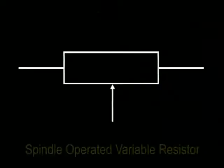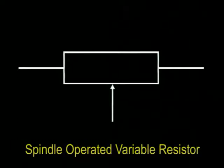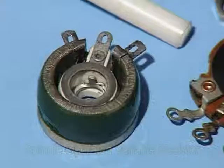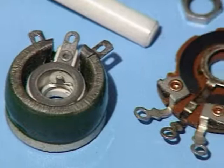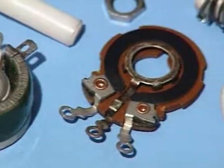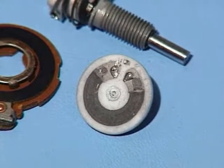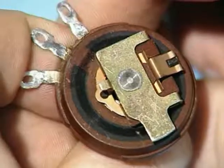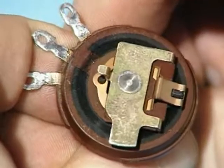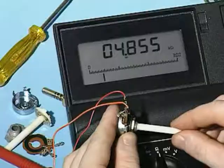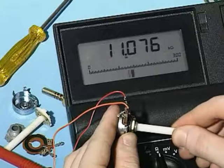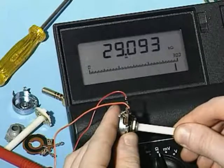This is the symbol for a spindle operated variable resistor. We can see that it has three terminals. The two outer terminals are connected to the track, which can either be wire wound, carbon, or ceramic, onto which is fired a metal oxide film. The third terminal is connected to the wiper, which moves over the track, and this varies the amount of resistance included in the circuit.